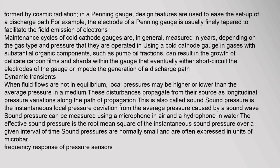When fluid flows are not in equilibrium, local pressures may be higher or lower than the average pressure in a medium. These disturbances propagate from their source as longitudinal pressure variations — this is also called sound. Sound pressure is the instantaneous local pressure deviation from the average pressure caused by a sound wave. Sound pressure can be measured using a microphone in air and a hydrophone in water. The effective sound pressure is the root mean square of the instantaneous sound pressure over a given interval of time; sound pressures are normally small and are often expressed in units of microbar.